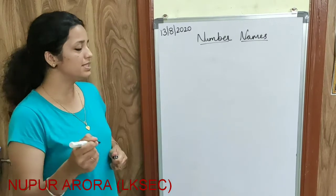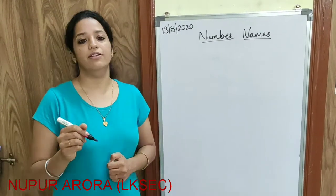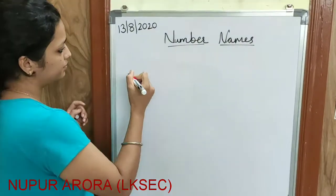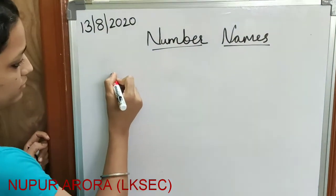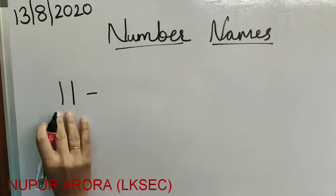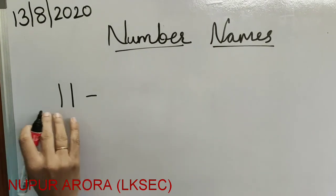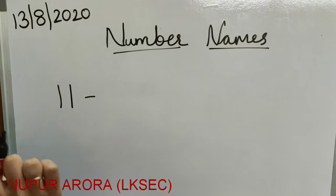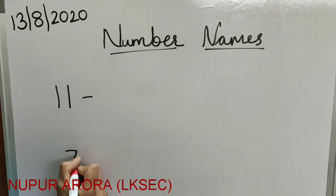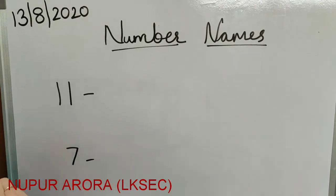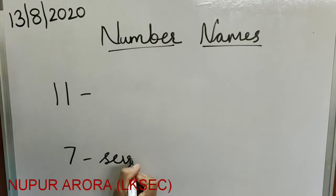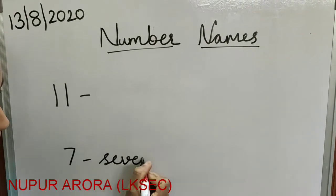So we will look at number 11. I will give you one trick. See, you know the spelling of 7? S, E, V, E, N — that is 7.